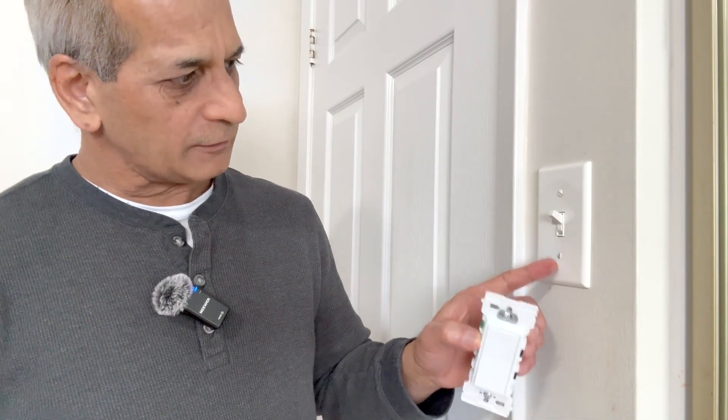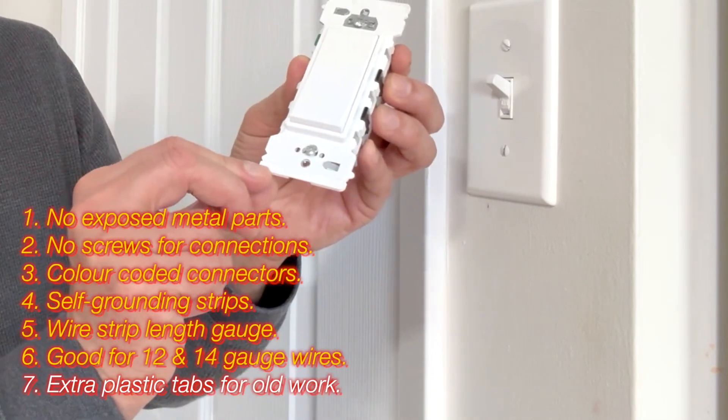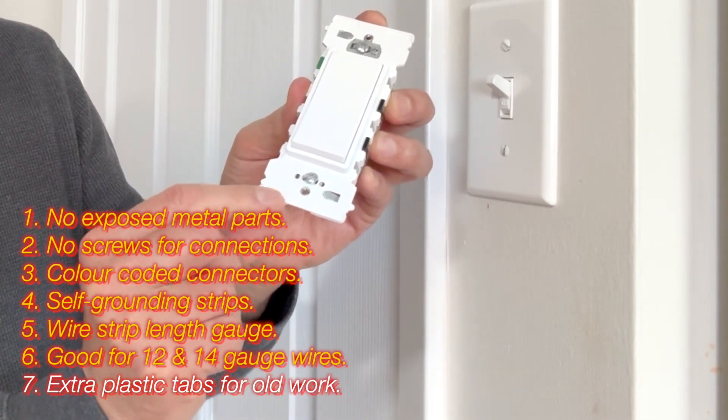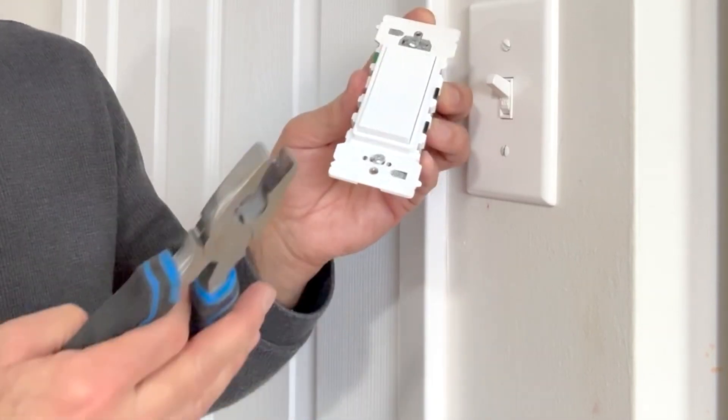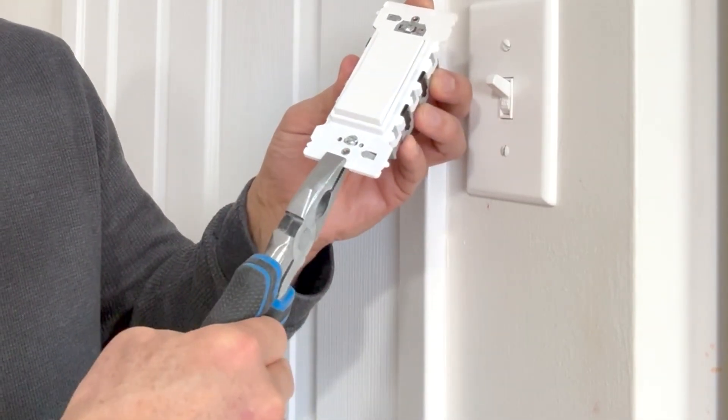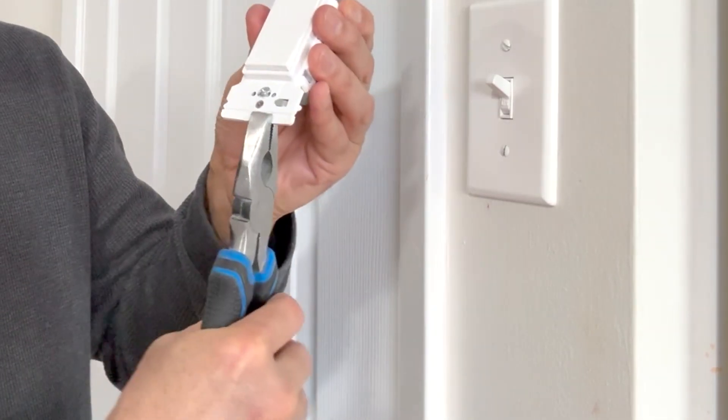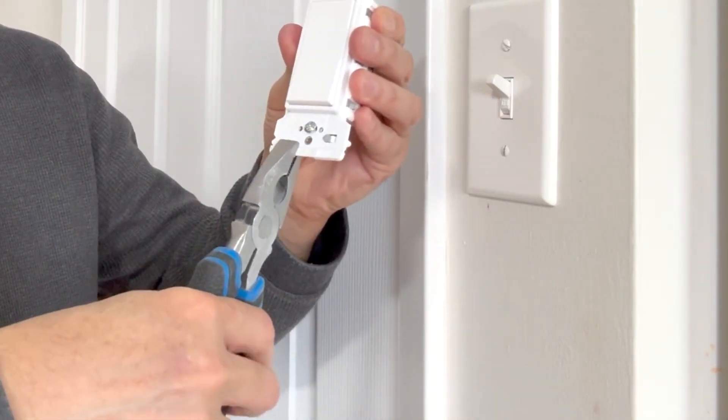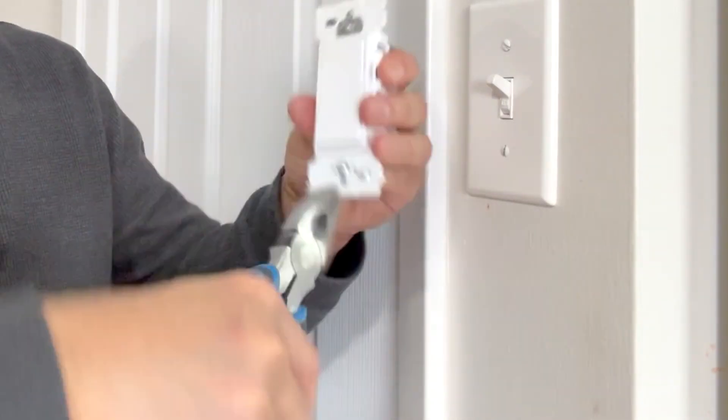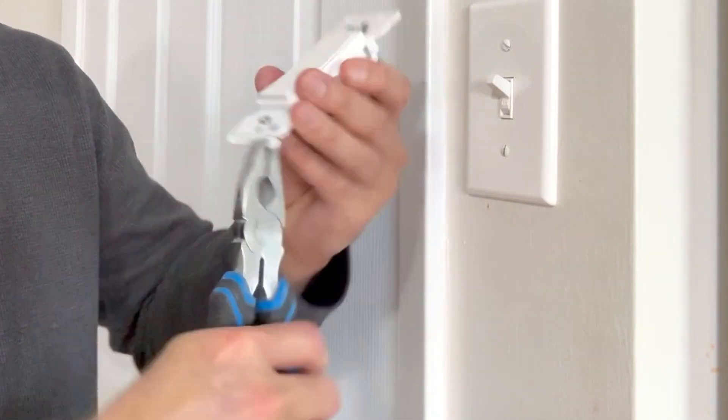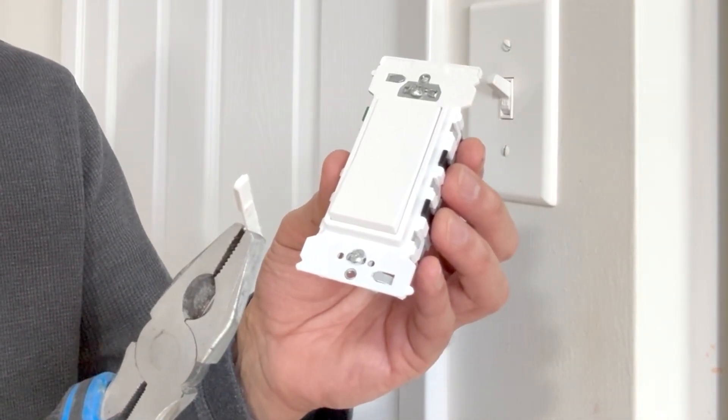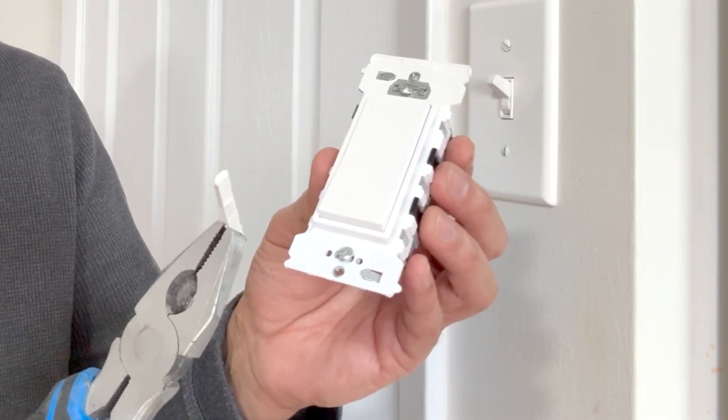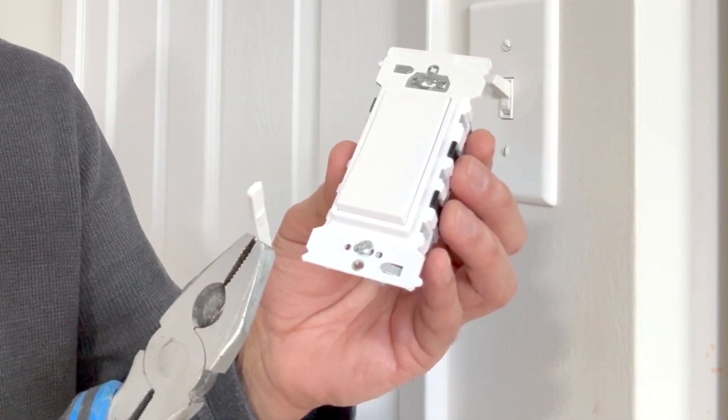So for old work like this if you have a bigger hole this switch has extra tab on top and bottom. You can keep these tabs otherwise you can just break them. Take a plier hold it from here and twist it couple of times inside outside and it will break. There you go. If you decide not to break these extra plastic tabs then you will need a midway cover plate which is larger than the normal size.